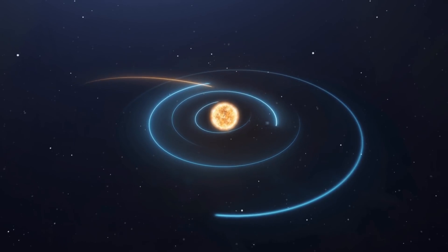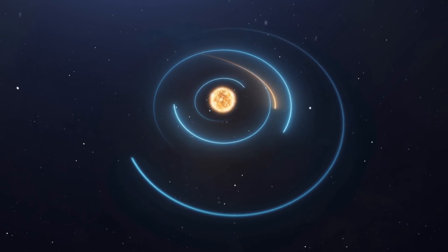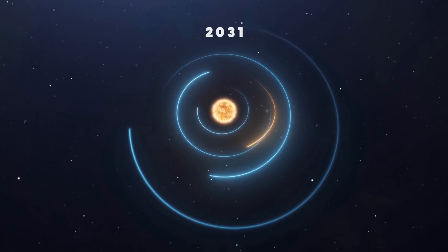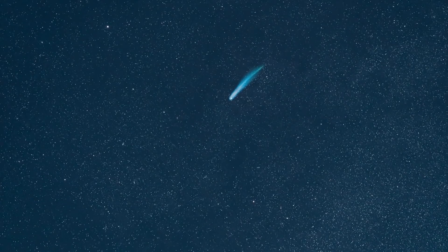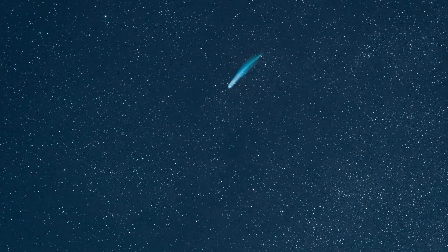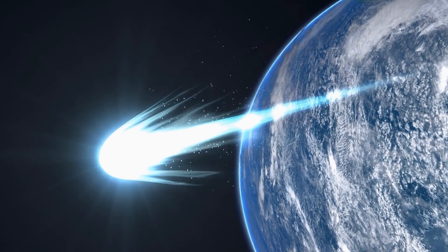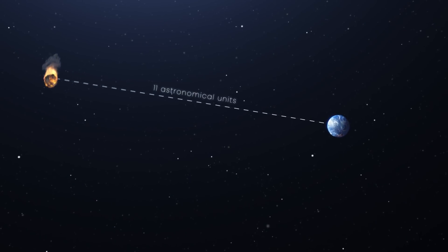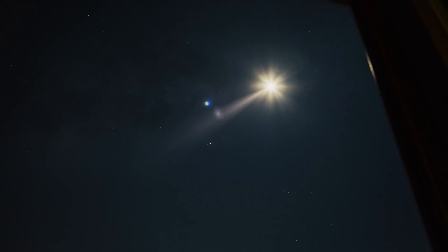According to scientific estimates, the closest encounter with the Bernardinelli-Bernstein comet will come in 2031. So far, astronomers claim the comet imposes no threat, as it will fly by at a significant distance from us. The closest it will get is 11 astronomical units. That's about 10 times farther away from the Sun than the Earth. It won't even be visible in the sky with the naked eye.